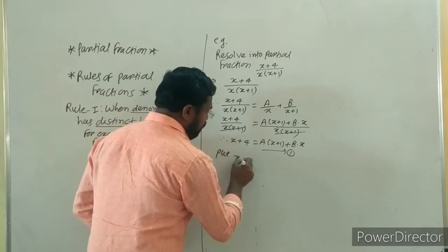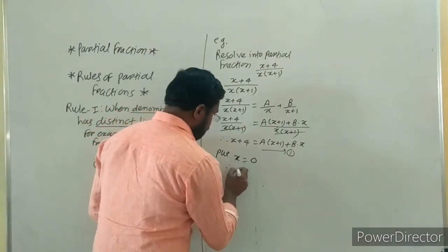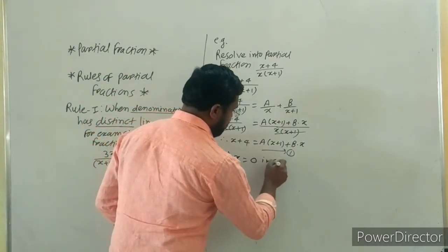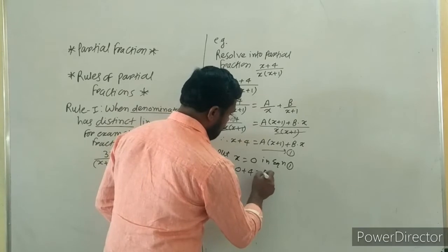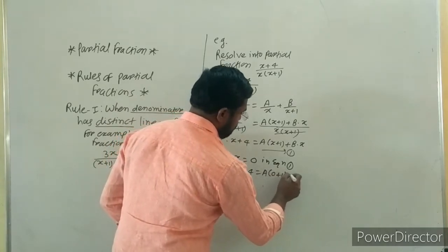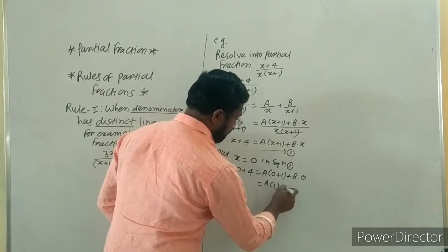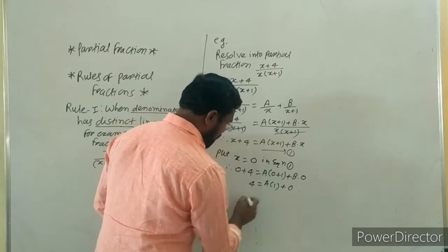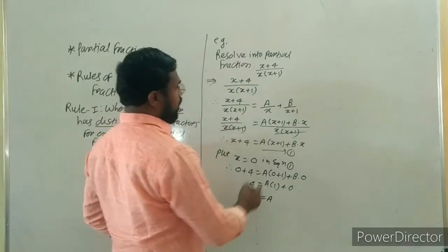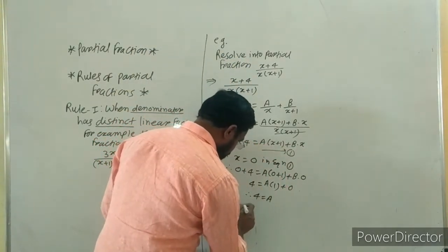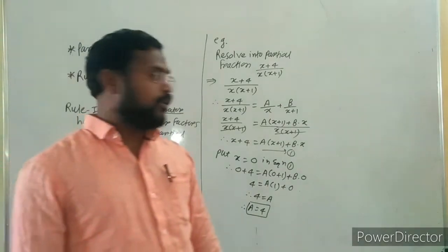Therefore, put x equal to 0 in equation number one. Therefore: 0+4 equals A in bracket (0+1) plus B into 0, which equals A times 1 plus 0. Therefore 4 equals A, so the value of A is equal to 4.